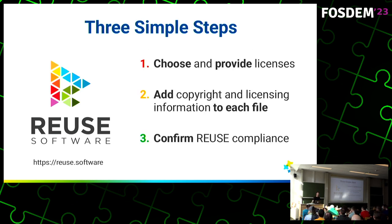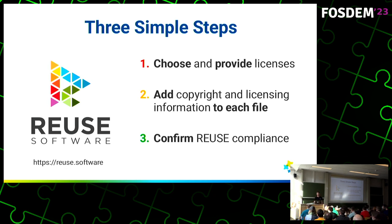There are three simple steps to using ReUse. First, you choose and provide the license — ReUse has a nice little dialogue for you when you start it up the first time. Then you add copyright and licensing information, preferably to every file. And then we have a range of tooling that allows you to confirm this ReUse compliance, either in a pre-commit hook, in CI, or locally on your machine.